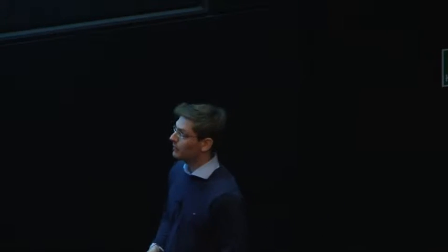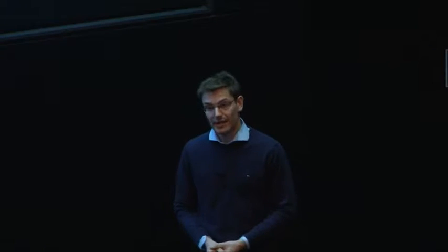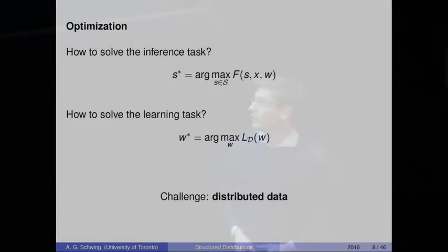The third part is the optimization challenge. Two important problems are the inference problem and the learning problem. In inference, we are interested in finding the output space object S star that maximizes over all possible output space configurations calligraphic S this scoring function F. The second related problem is how do we find the parameters W of this fitness function — that's known as the learning task. The challenge is how do we deal with the huge amount of data available. I want to first look at the inference problem and show how to solve inference in graphical models in a distributed way, before turning to the learning problem where I'll show how to combine deep learning with graphical models.